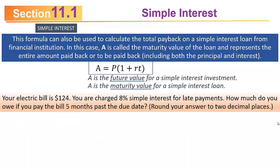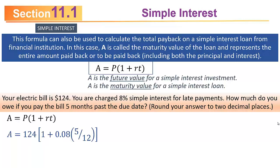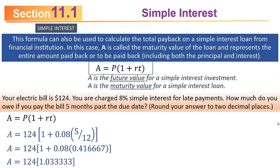Your electric bill is $124, and you are charged 8% simple interest for late payments. How much do you owe if you pay the bill five months past the due date? Using A = P(1 + RT): P = $124, r = 0.08, t = 5/12 ≈ 0.4166667 years. Multiplying 0.08 × 0.4166667 and adding 1 gives 1.0333333; multiplied by 124 gives $128.13. Don't round too much in preliminary calculations — carry extra decimal places and round only at the end.